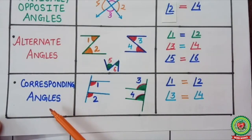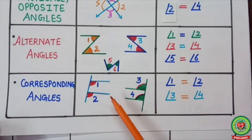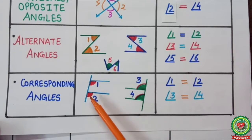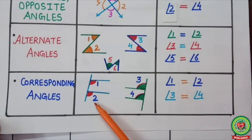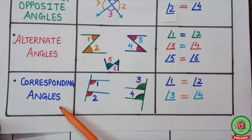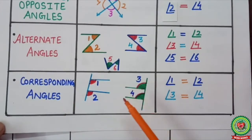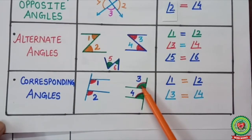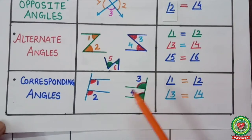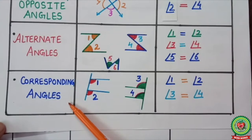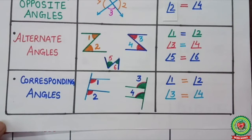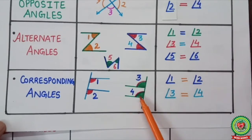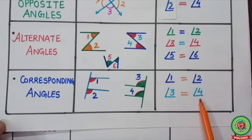Now, corresponding angles form when an F shape or stair-like shape is there. Angle one and angle two are corresponding angles. Similarly, angle three and angle four are at the upper side of the F shape, so they are also corresponding angles. Remember, corresponding angles are also equal. Therefore, angle one equals angle two, and angle three equals angle four.